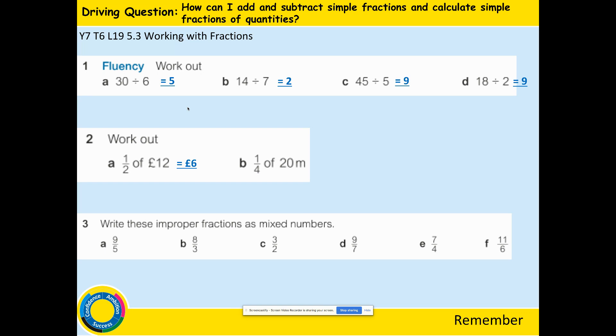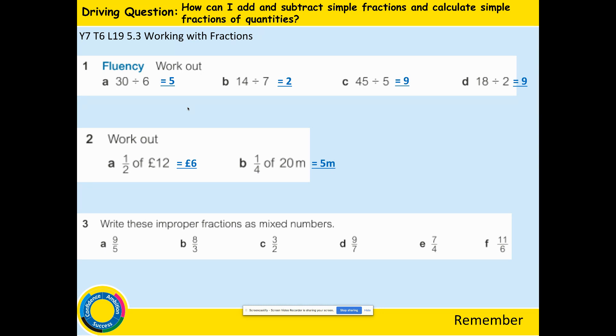A quarter of 20: we divide by 4, which gives 5. Check with the inverse: 5 times 4 is 20.